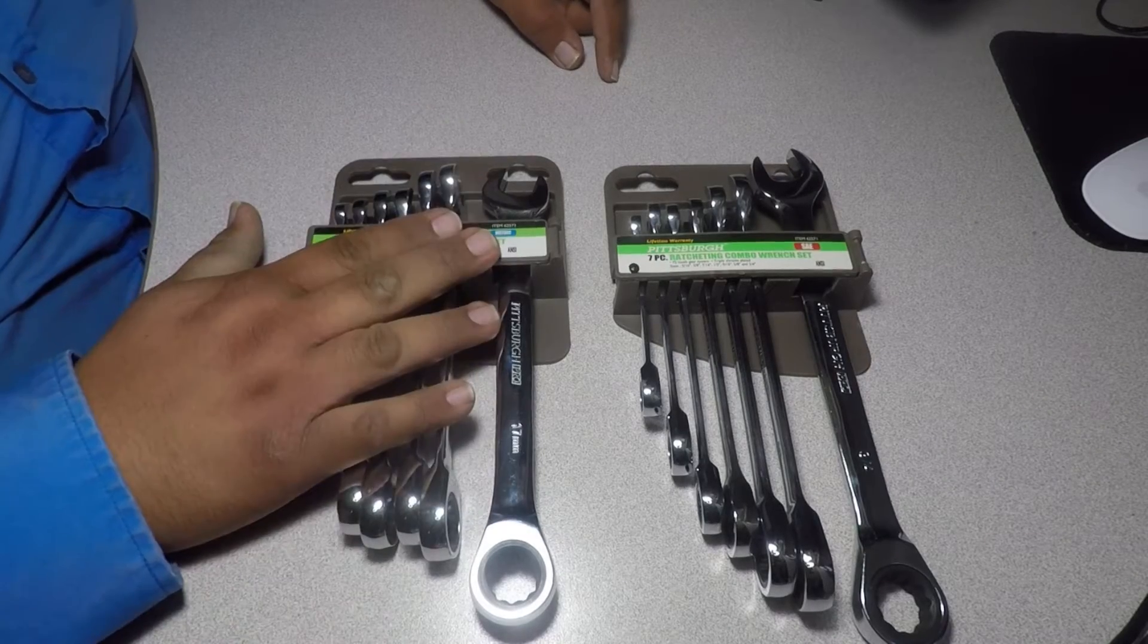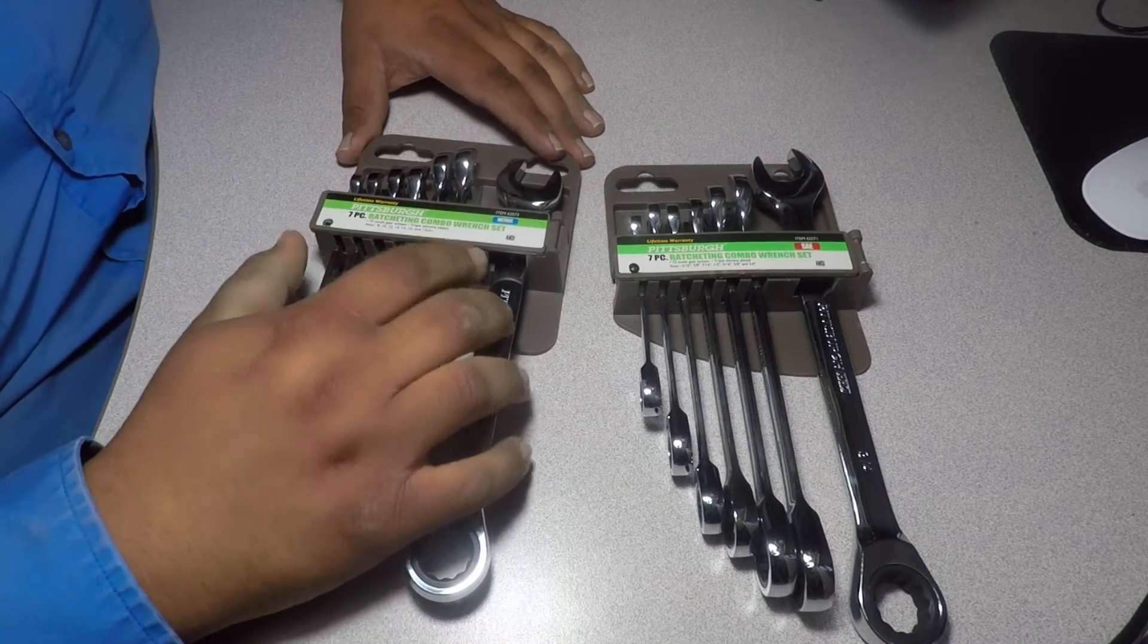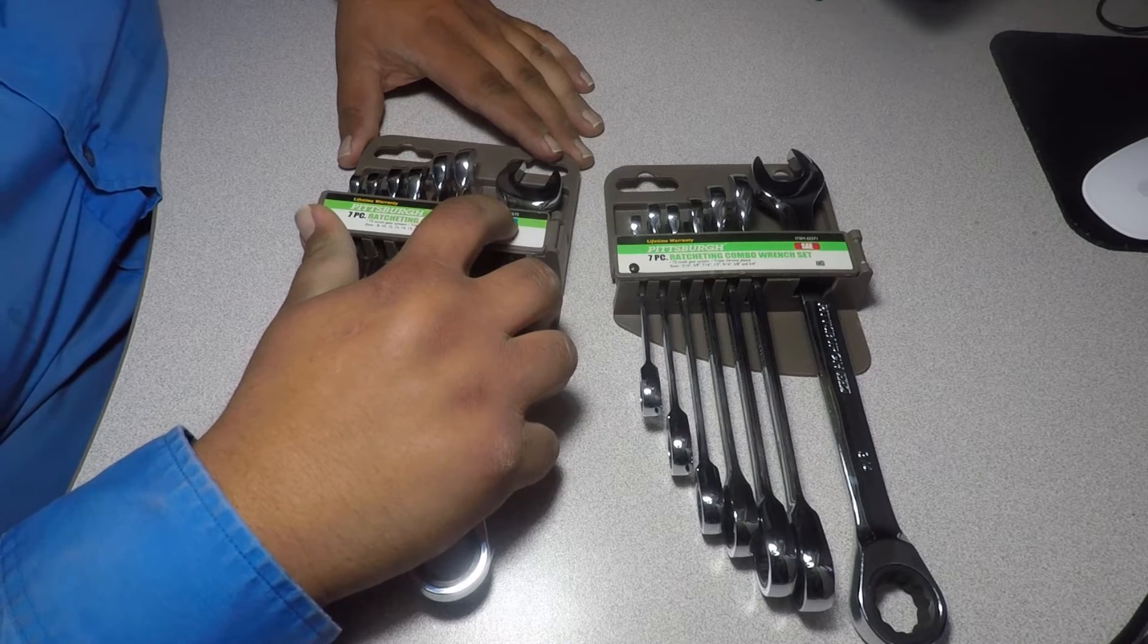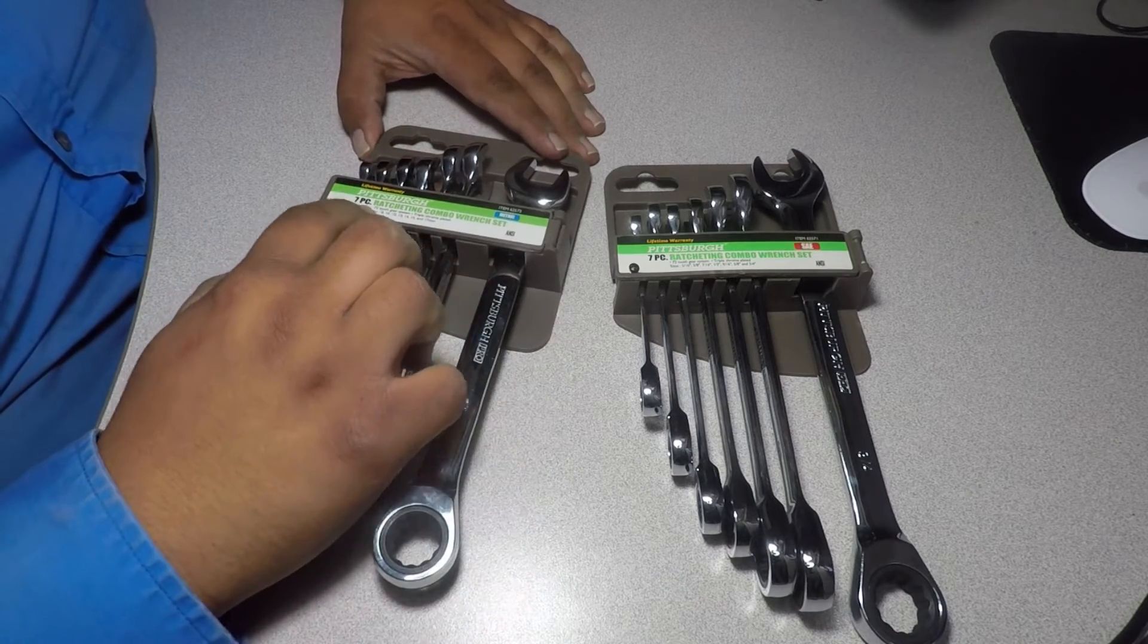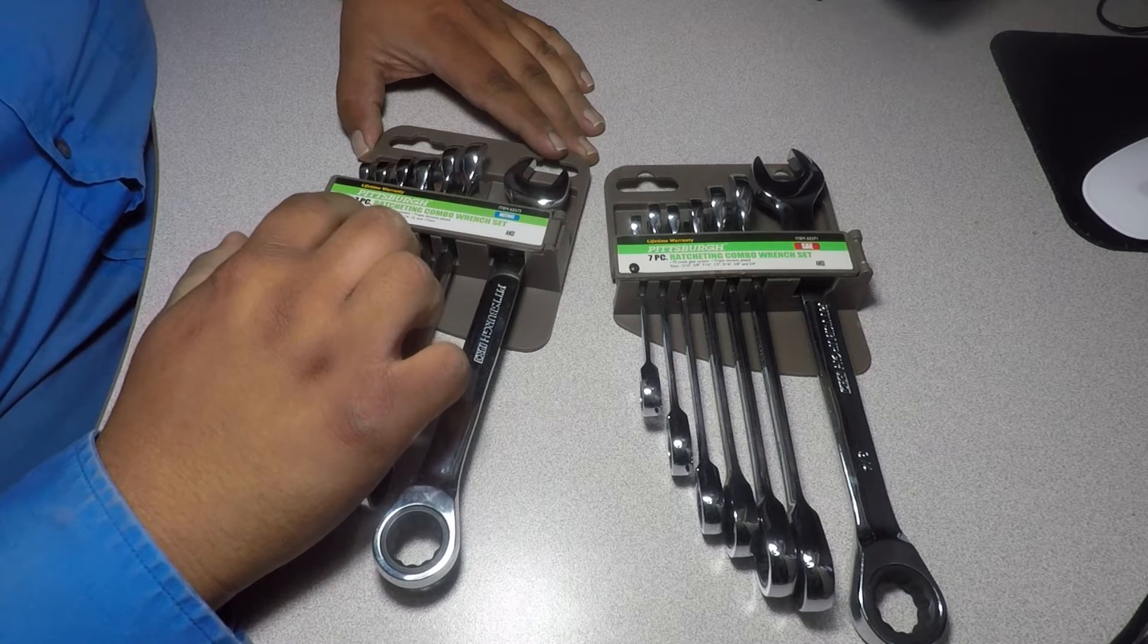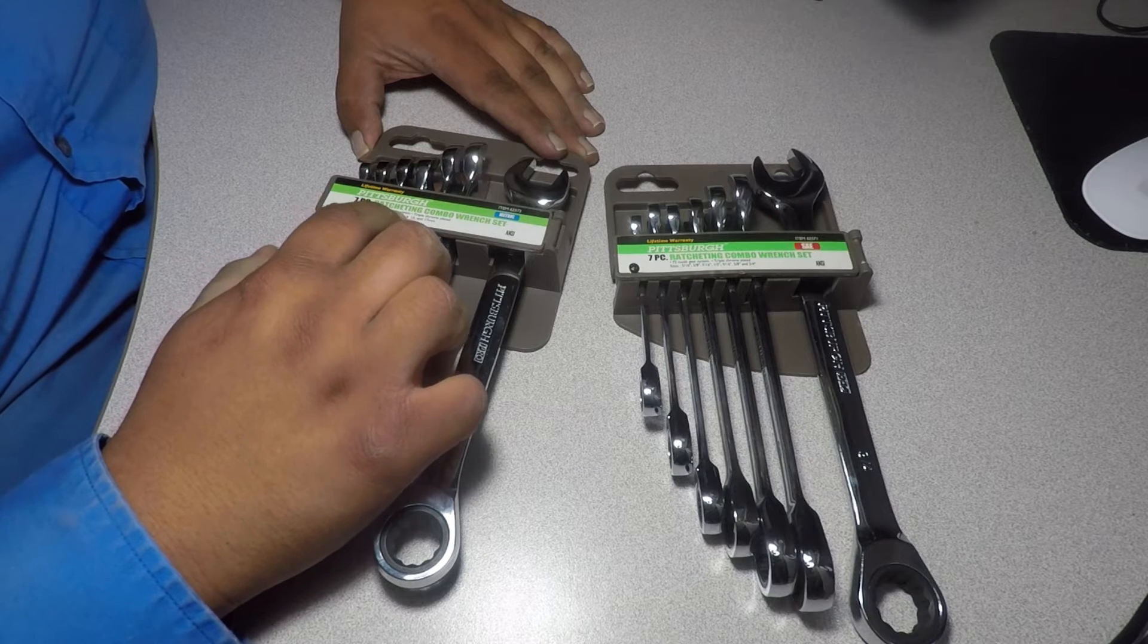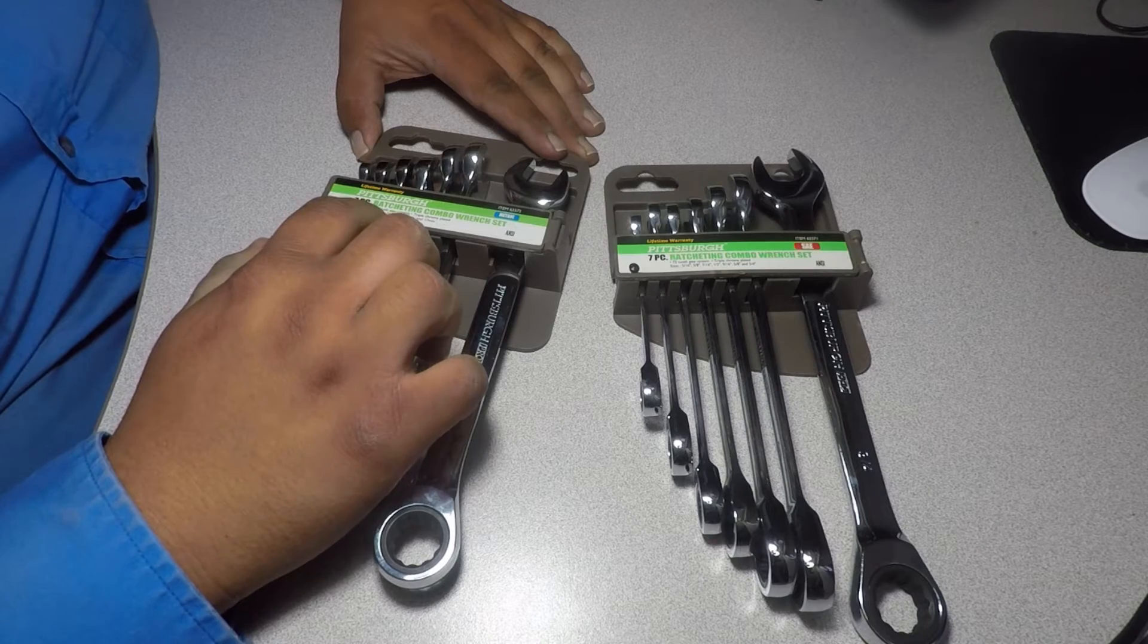All right, we got the metric and then we got the SAE. On the metric we got item number 62572 and then we got the 7 piece ratcheting combo set, 72 tooth gear system, triple chrome plated.